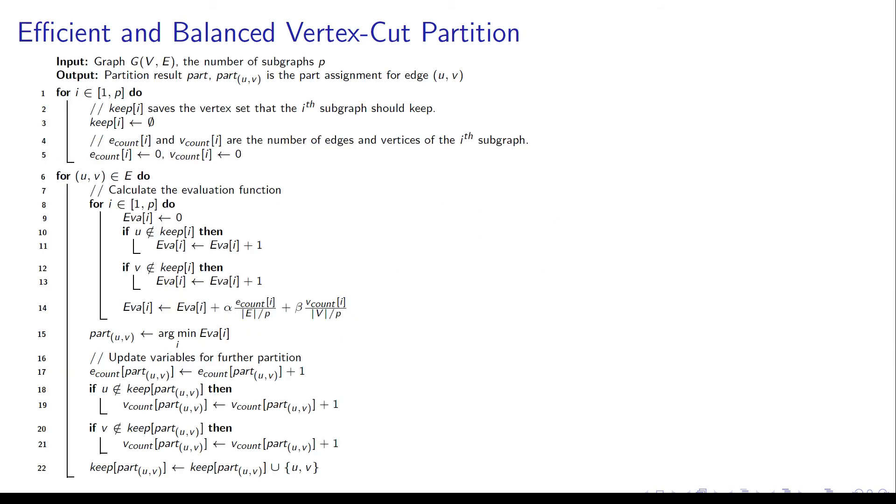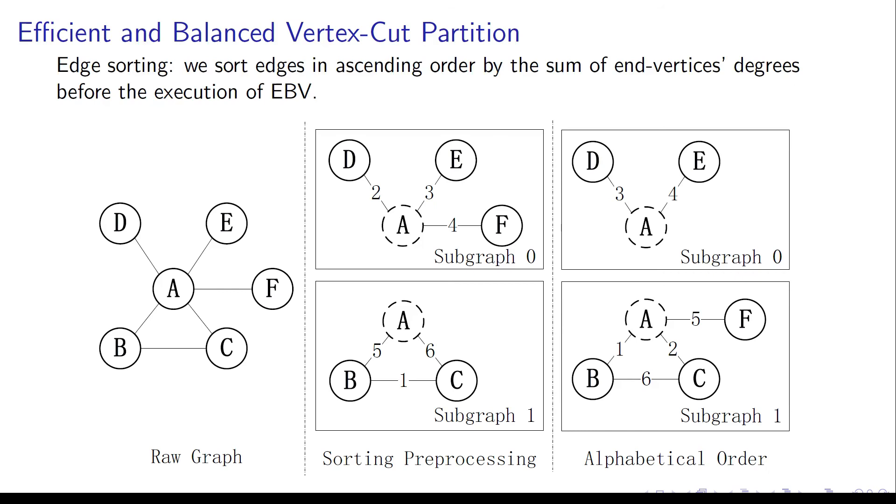Here is the pseudocode of our partition algorithm. We can find that it's clear and easy to implement. From line 1 to line 5, we initialize some temporary variables for recording the state of each subgraph. From line 8 to line 14, we calculate the evaluation function and choose the partition result in line 15. In the end, we update the temporary variables.